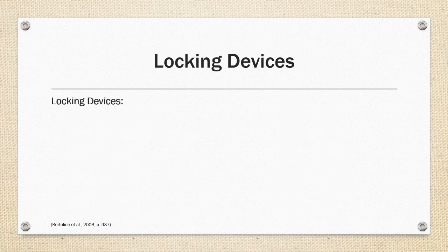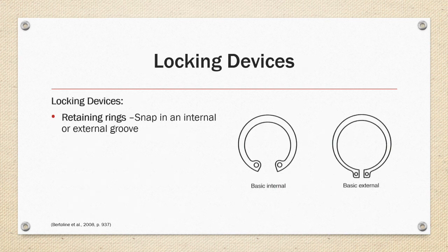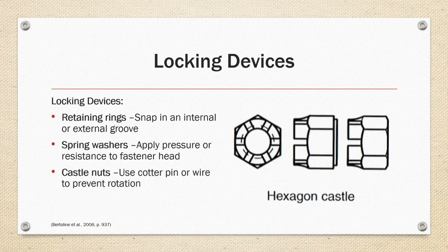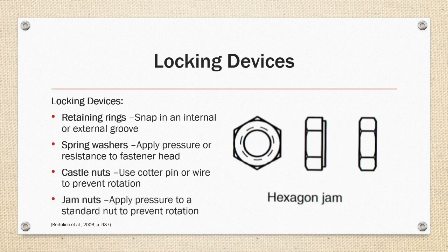Locking devices. There are many locking devices designed to keep fasteners from coming loose. Retaining rings snap into an internal or external groove. Spring washers apply pressure or resistance to the fastener head. And castle nuts use a cotter pin or a wire to prevent the nut from rotating. And as we talked about before, the jam nuts apply pressure to a standard nut to prevent rotation.